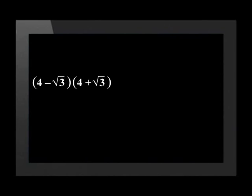A conjugate is an expression which is almost the same as the original binomial, except the sign between the two terms is changed. The conjugate of 4 minus the square root of 3 is 4 plus the square root of 3.